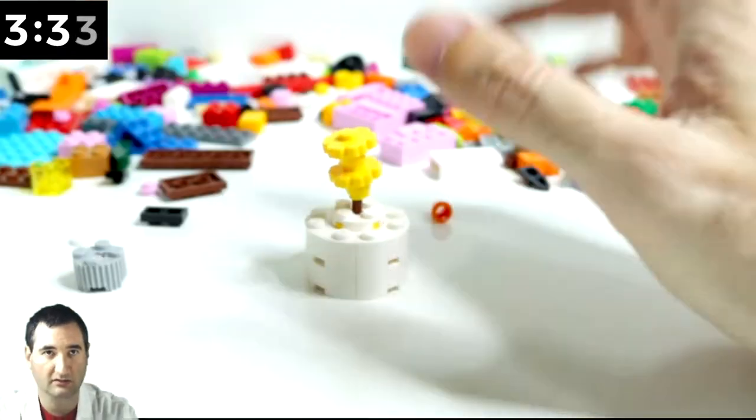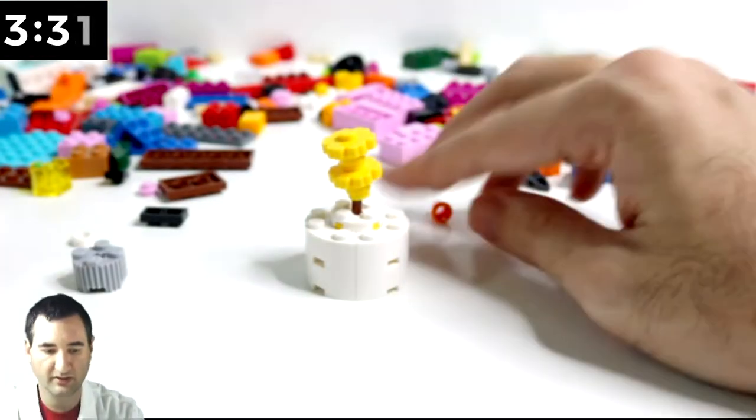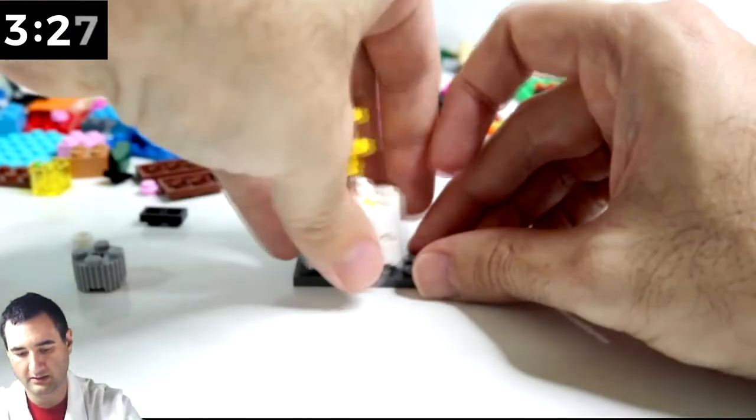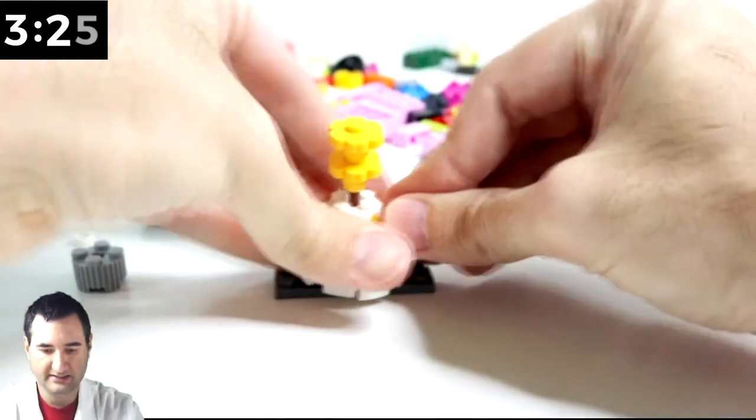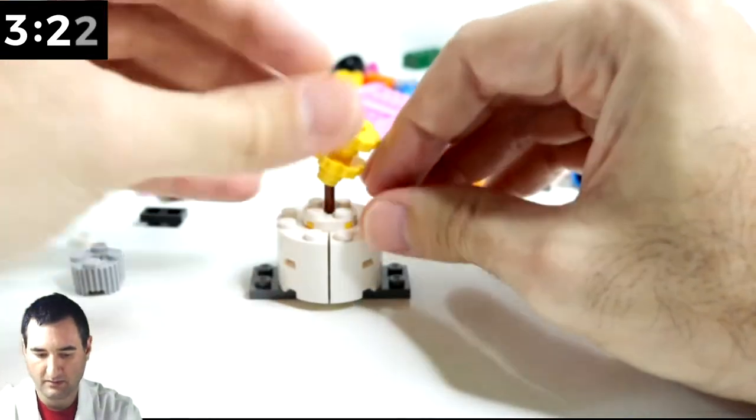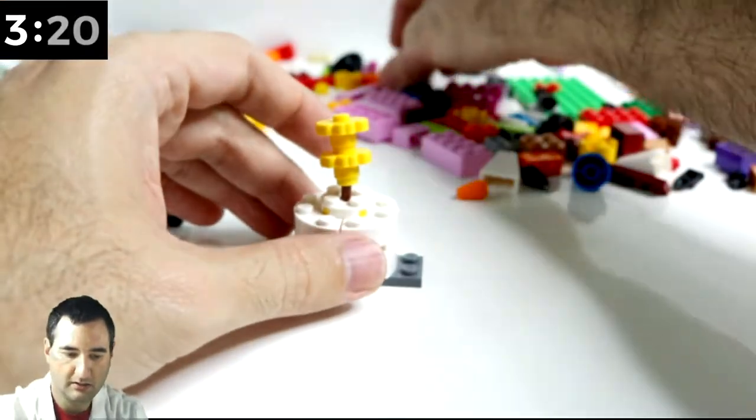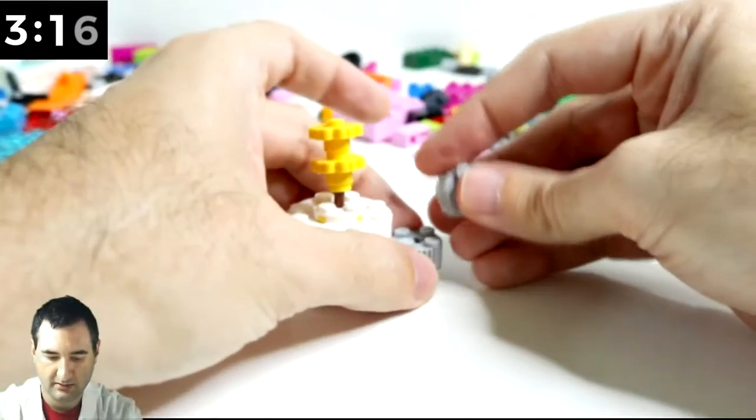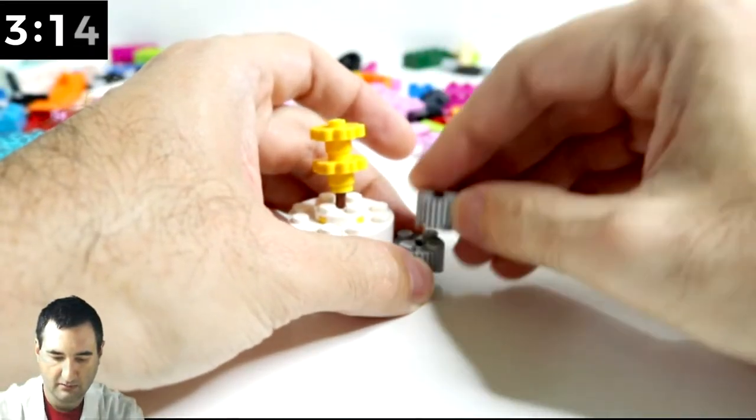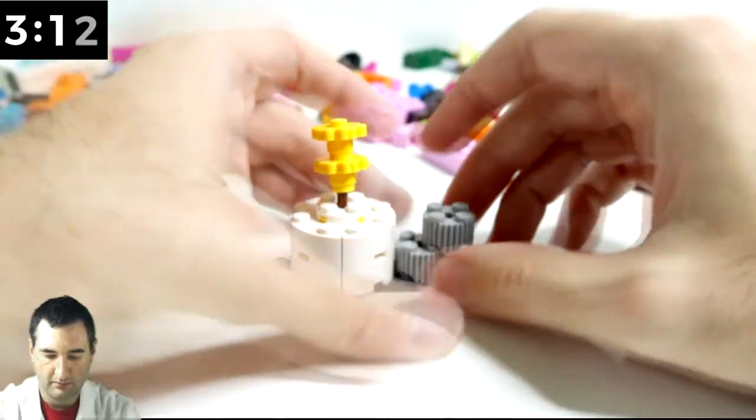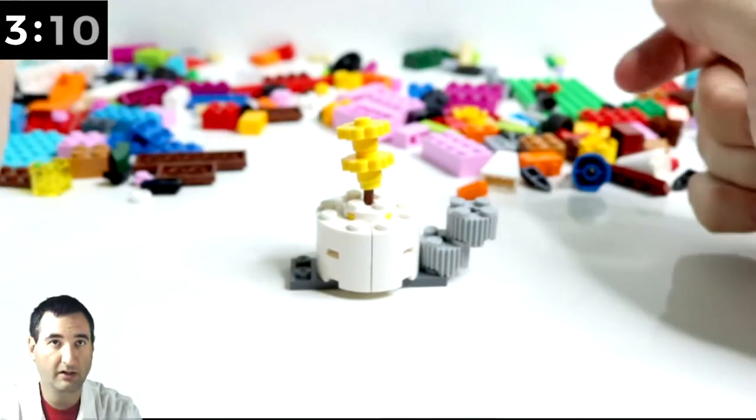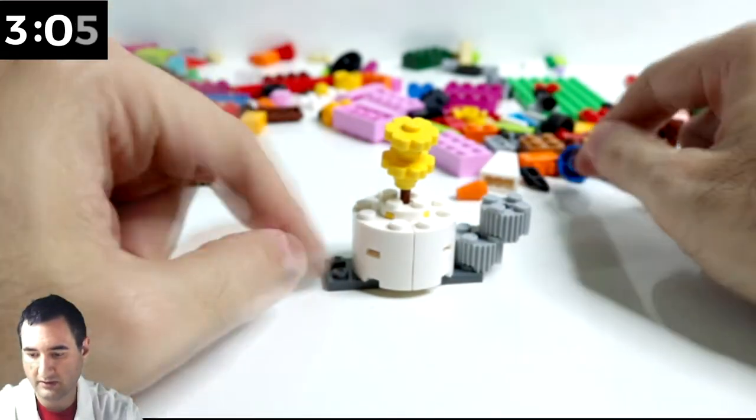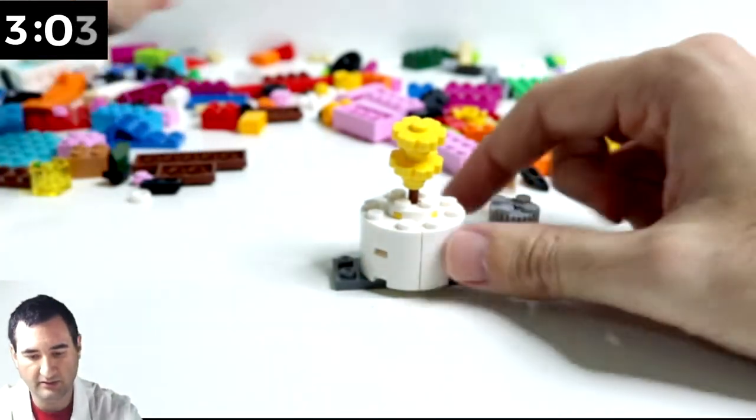Now I want to make a base to this candle, like a base or something. Maybe something like this, like an Aladdin, like a genie bottle or a lamp. Genie lamp, that's what you would call it, right? Do I have any other gray pieces? Oh yeah, right here.